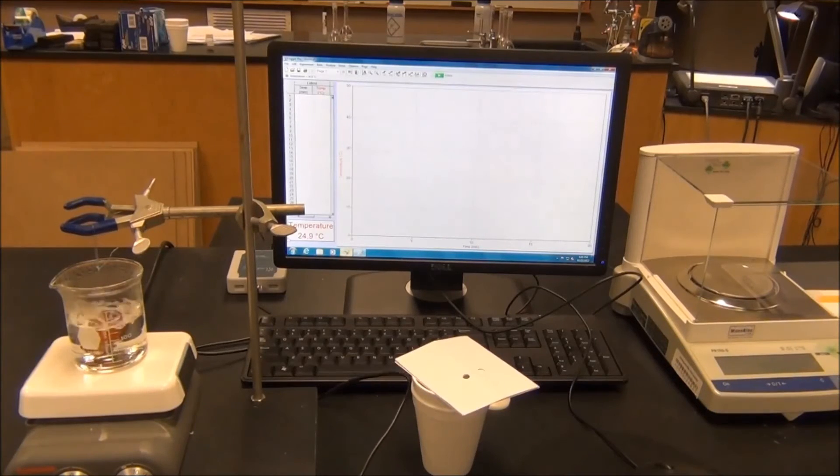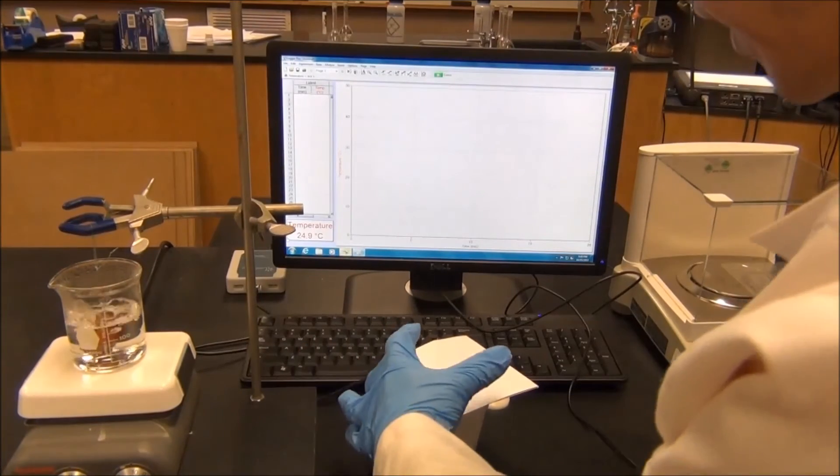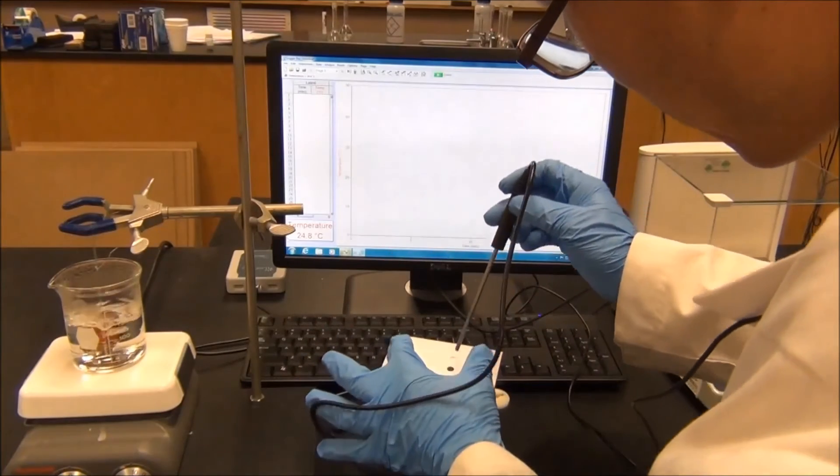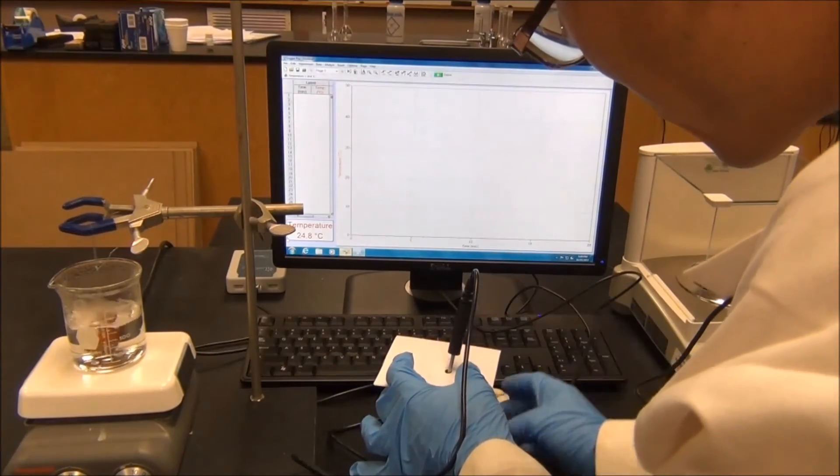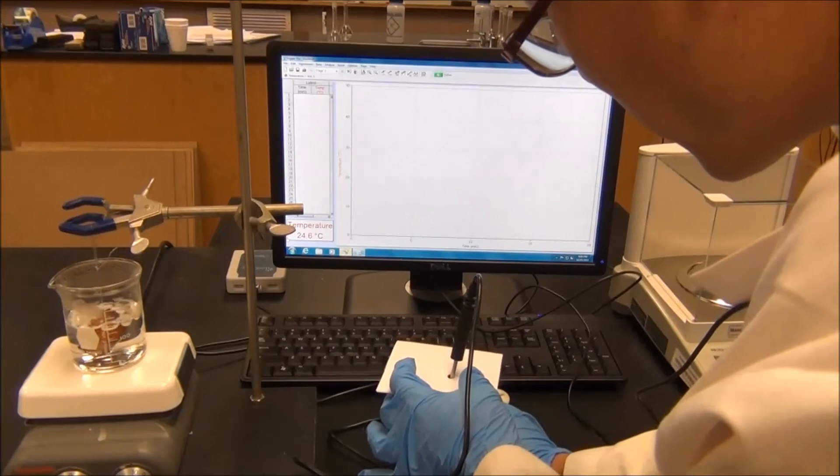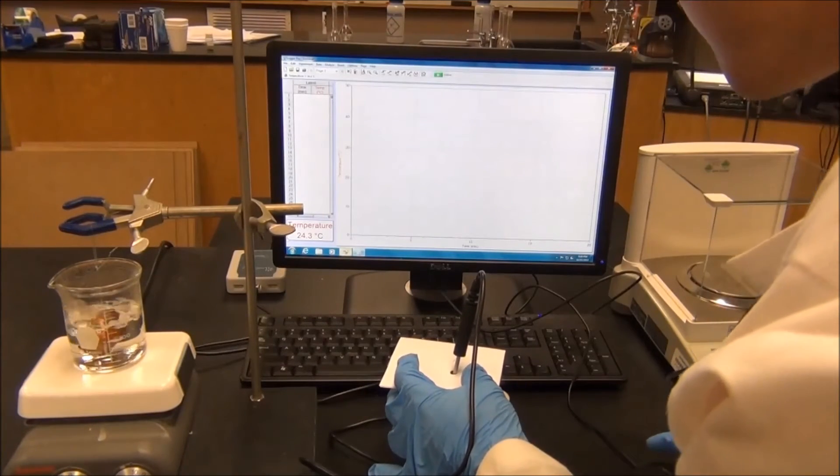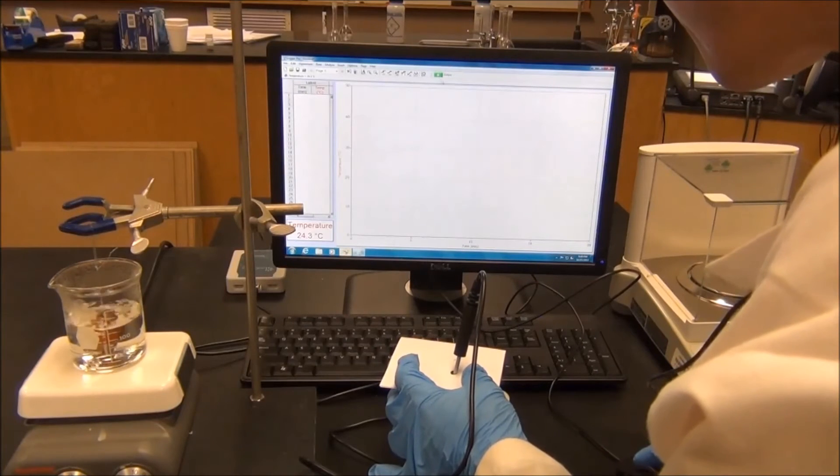Since we need to monitor the initial temperature of the water in the calorimeter, we will insert the temperature probe inside the calorimeter. We may need to gently swirl. And then we need to start the data collection by clicking collect.